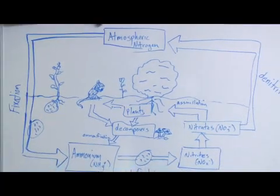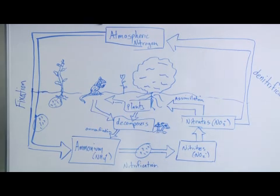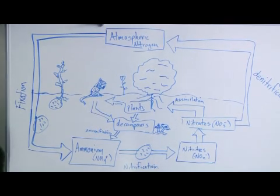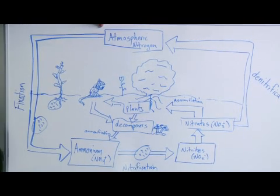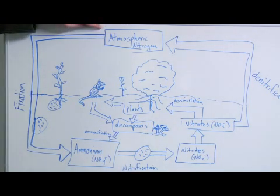So this is a cycle, but we're going to start in the sky. Atmospheric nitrogen makes up approximately 79% of the atmosphere, but nitrogen as a gas is only usable by a few different organisms. So nitrogen needs to be changed into a usable form.